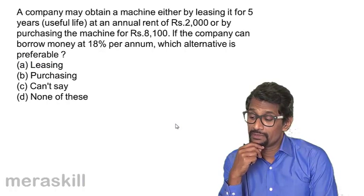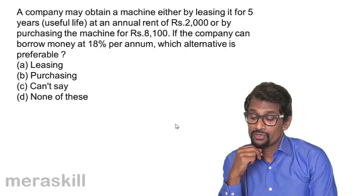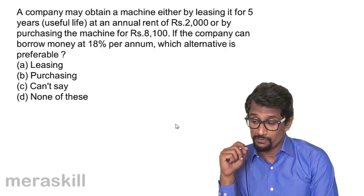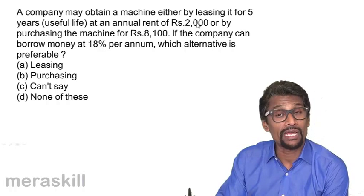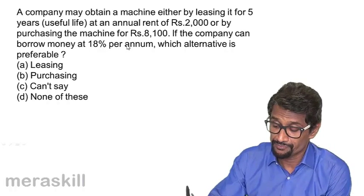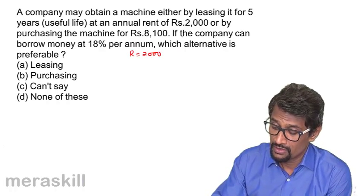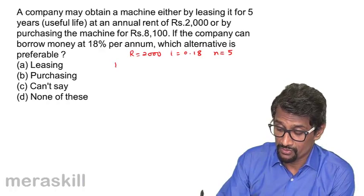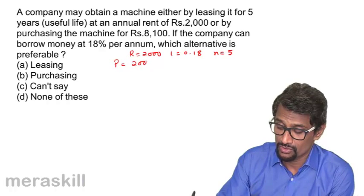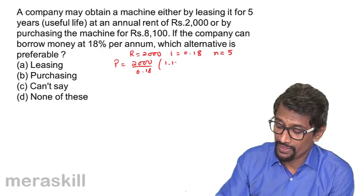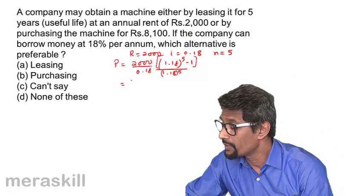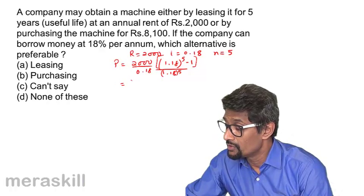The next problem: a company may obtain a machine either by leasing it for five years at an annual rent of 2,000, or by purchasing the machine for 8,100. If the company can borrow at 18% per annum, which alternative is preferable? The annual rent is 2,000, so we need to calculate the current value of this annual rent. Taking r equal to 2,000, i equal to 0.18, n equal to 5, we calculate the present value: P equals r upon i, that is 2,000 upon 0.18, multiplied by (1.18 raised to 5 minus 1) upon 1.18 raised to 5.